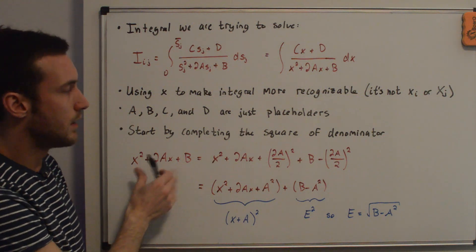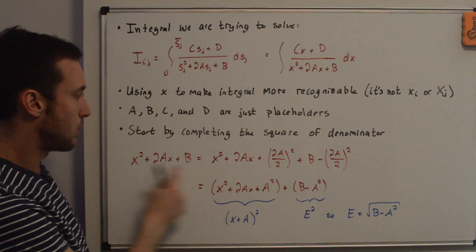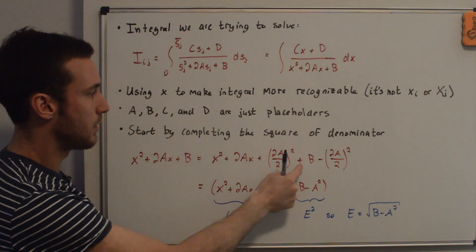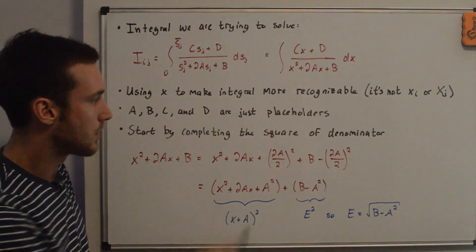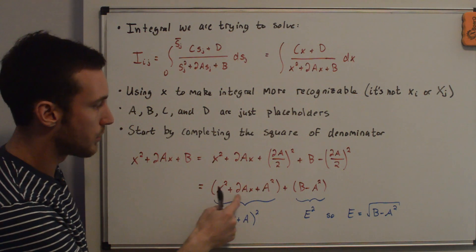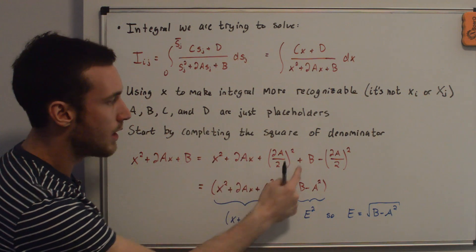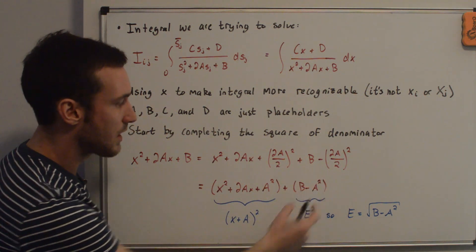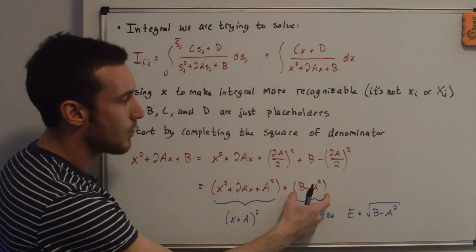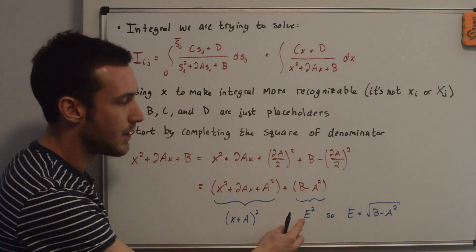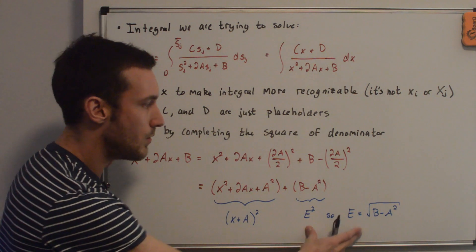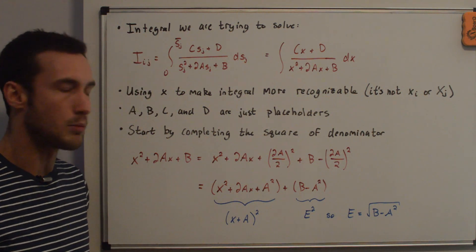We can get it into a nice form by completing the square of the denominator. Taking x² + 2ax, we add and subtract a², giving (x + a)² + (b - a²). We define e² = b - a² for convenience — this substitution appears in most textbooks — so the denominator becomes (x + a)² + e².